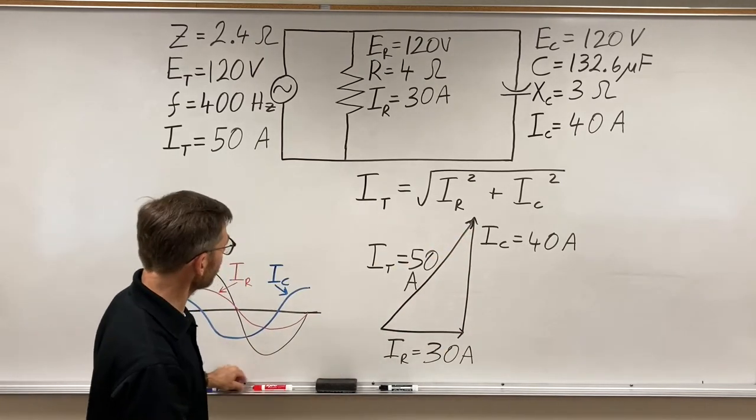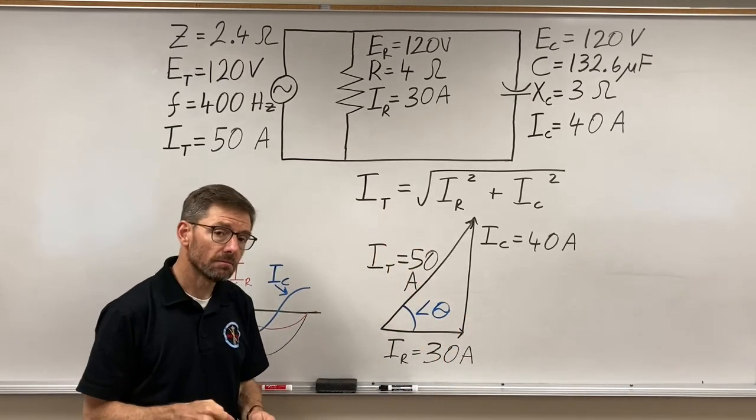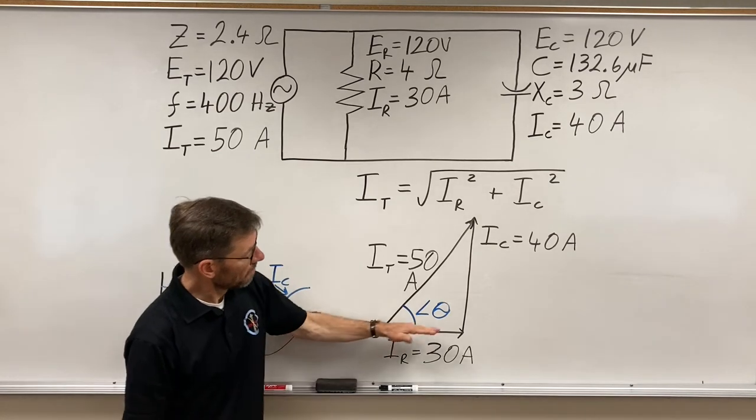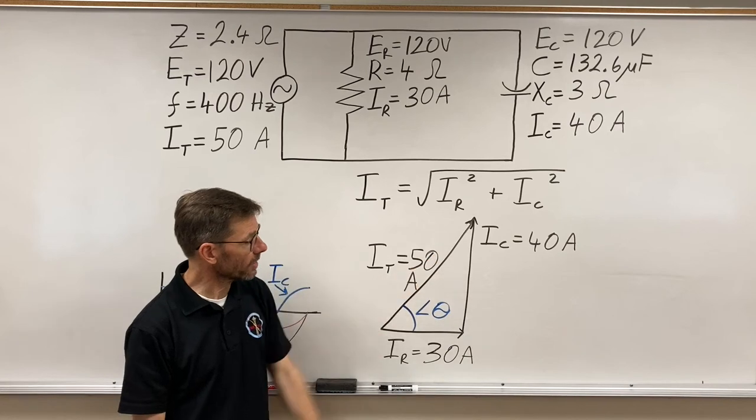Could we figure out angle theta from here? Yes. Angle theta, the cosine of angle theta, is adjacent over hypotenuse.